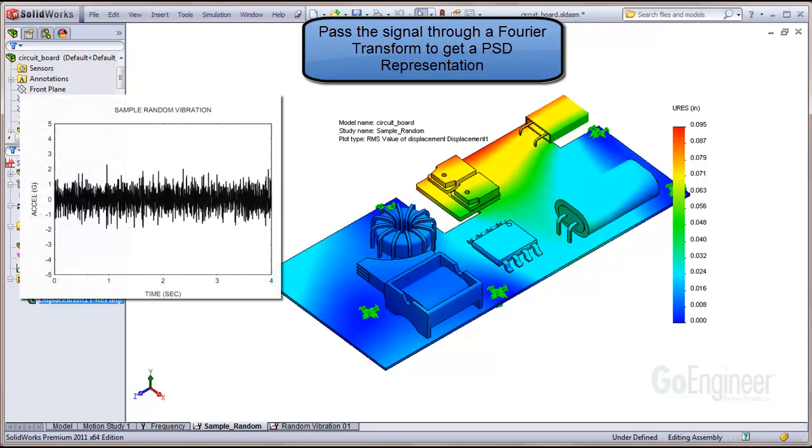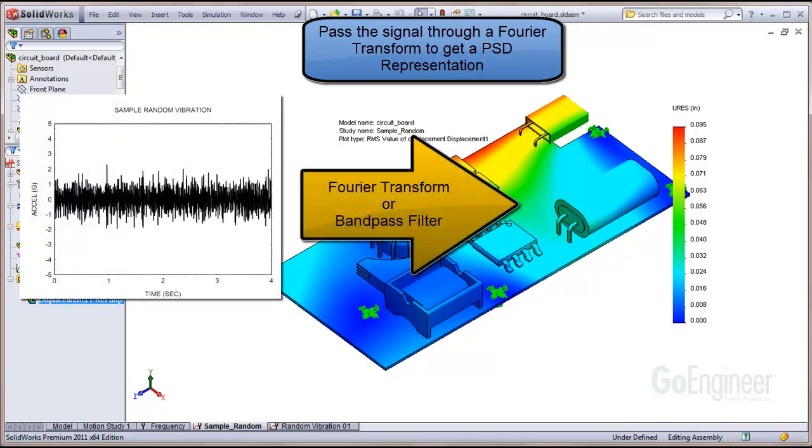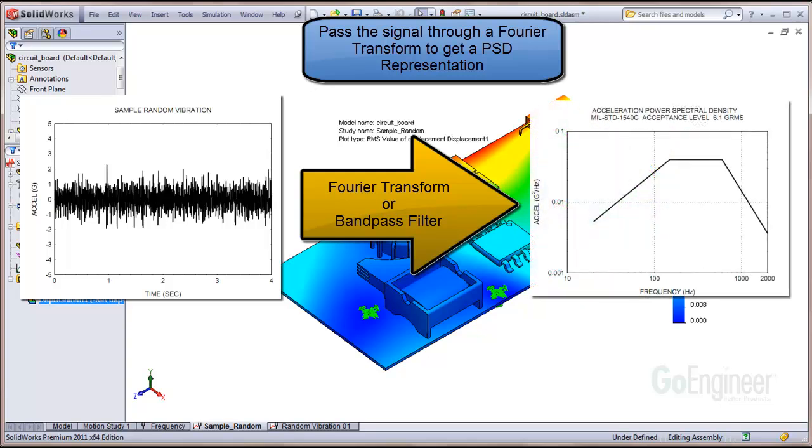Next, you would typically use commercial software to pass the signal through a Fourier transformation or equivalent bandpass filter to generate a PSD input graph like this.